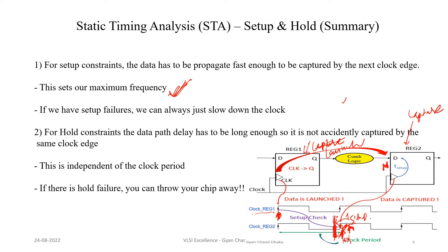That is one way. If we don't want to slow down our clock, then we have to make this path delay faster. To make this path delay faster, we have to use high drive strength combinational logic cells. So that is another way to avoid setup failures.